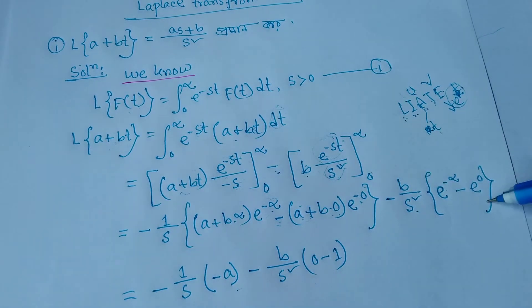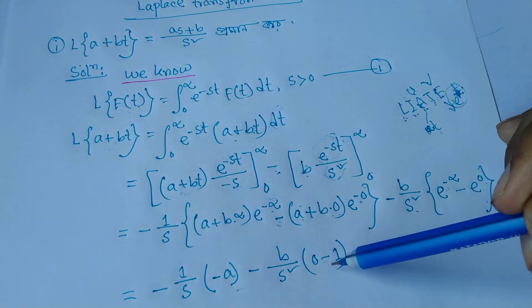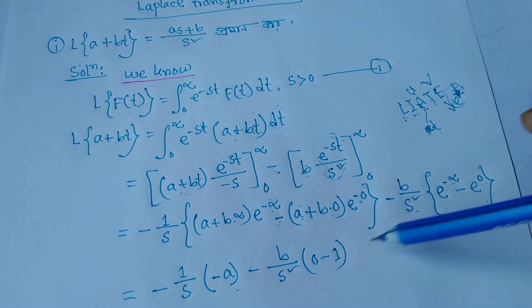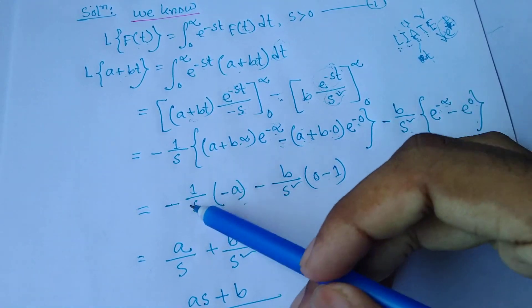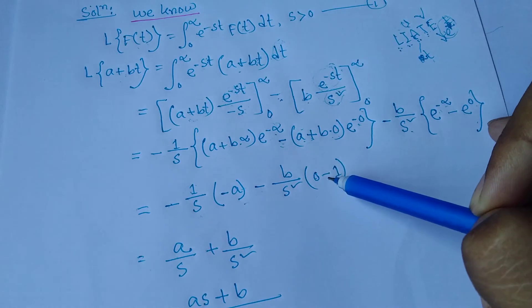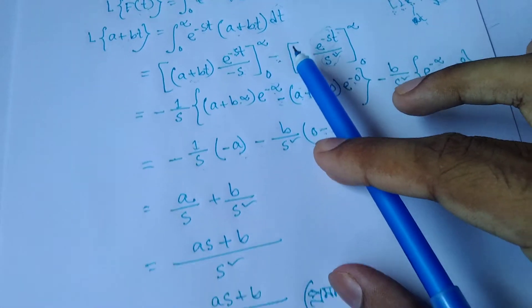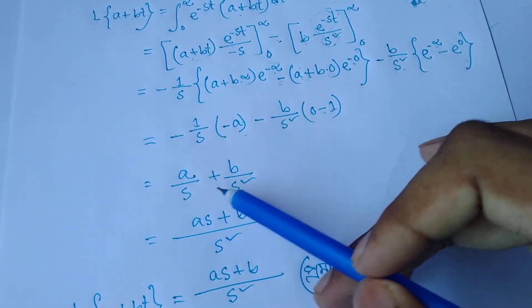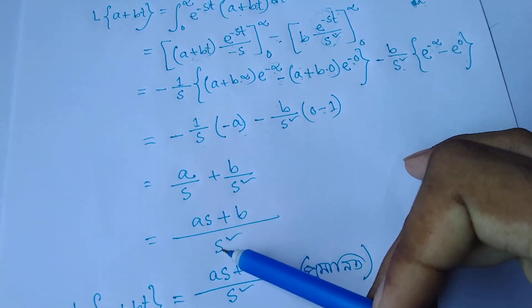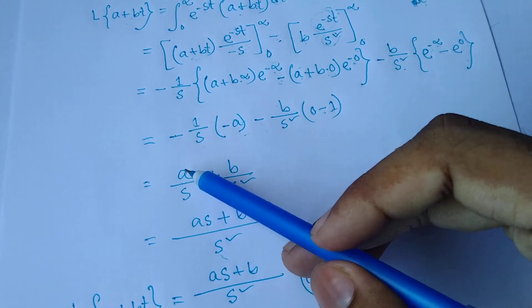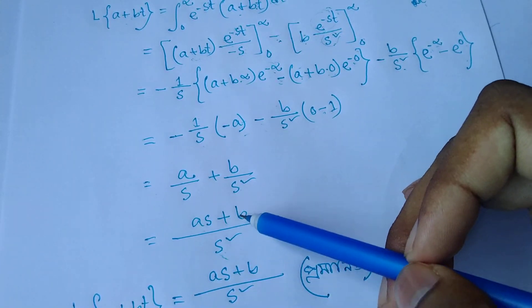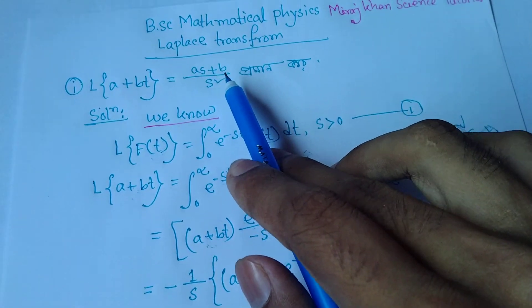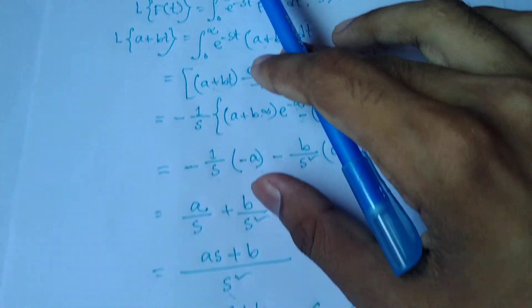The lower limit goes to minus infinity: e to the power 0 is 0, e to the power minus infinity is 0, e to the power 0 is 1. So a minus a divided by s, and a minus minus is a plus, giving a divided by s plus b divided by s square. Therefore the Laplace transform result is (as + b) divided by s square.